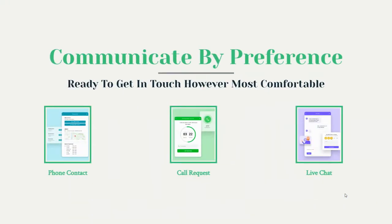Our third category is when people are ready to communicate with you — their questions are answered, they're genuinely considering you and ready to get in touch, wanting to move from anonymous to someone willing to provide information. We have three tools for that: phone contact, our call request tool, and live chat.